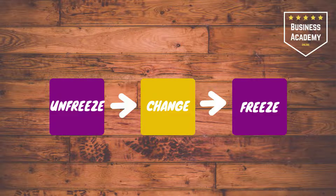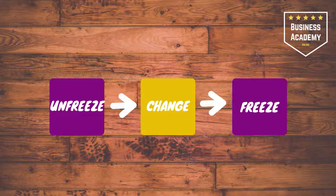Kurt Lewin developed a change model involving these three steps: unfreezing existing behavior, changing behavior, and refreezing. The model is very simple and practical, and it's all about changing the perception that change is needed, and then reinforcing that change. We're going to drill into each of these stages — the unfreeze, change, and refreeze — and it's sometimes referred to as the ice cube model.